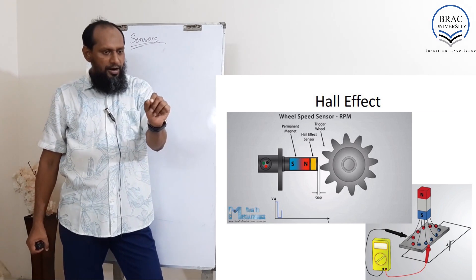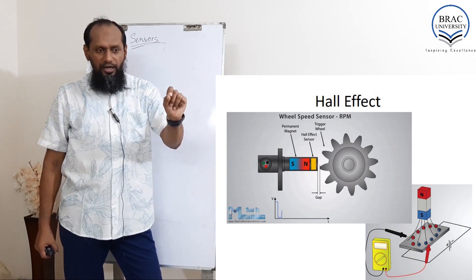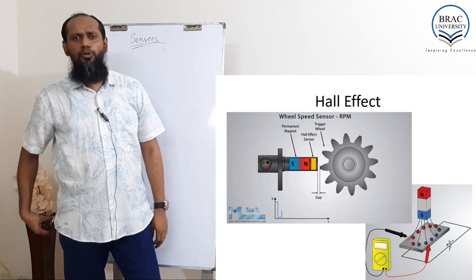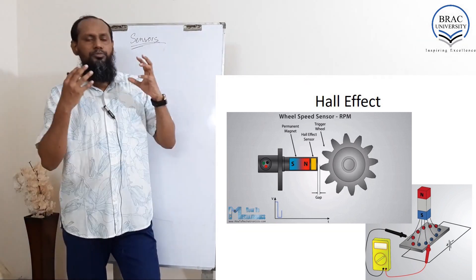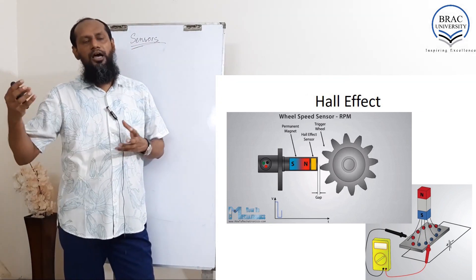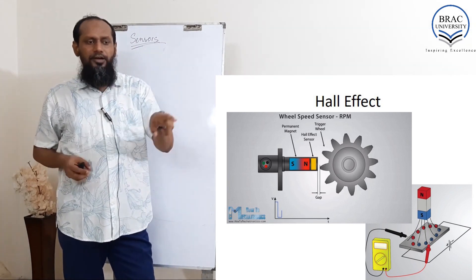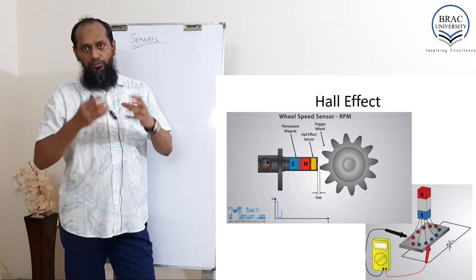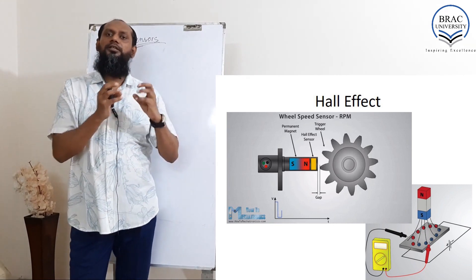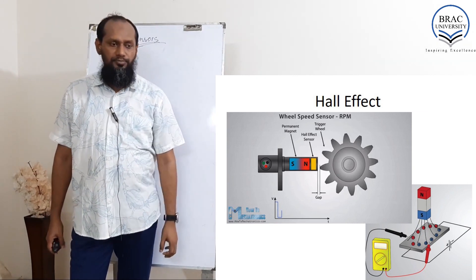When the metallic part comes closer, the output becomes 1, and when the gap part comes, it becomes 0. This is a very commonly used sensor in heavy machinery, for example to measure gear teeth, and it can even be used to detect faults in a gear.